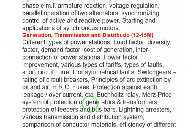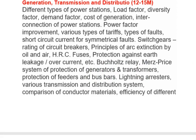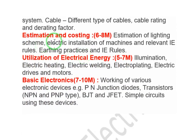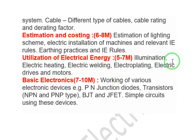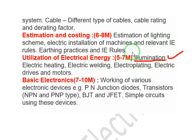Also covered are Buchholz relay and related relay topics. Estimation and Costing carries 6 to 8 marks, covering estimation of lighting schemes, electric installation of machines, and relevant IE rules. Utilization of Electrical Energy covers illumination, electric heating, electric welding, electroplating, and electric drives. Illumination and electric heating are the most important — units and simple problems will be asked.